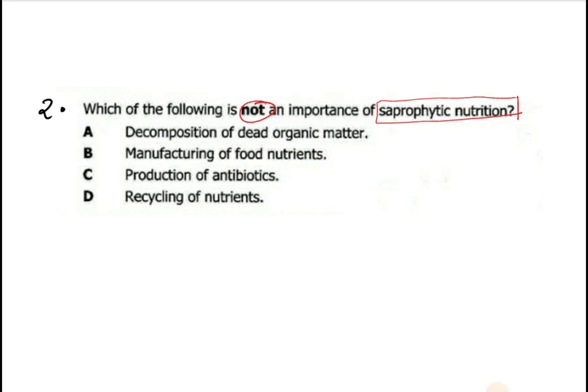Which one is not the importance? Number one: decomposition of dead organic matter - this is an importance. Manufacturing of food nutrients - yes, saprophytes like mushrooms are used in making food nutrients. Production of antibiotics - yes, for example penicillin comes from mushrooms.